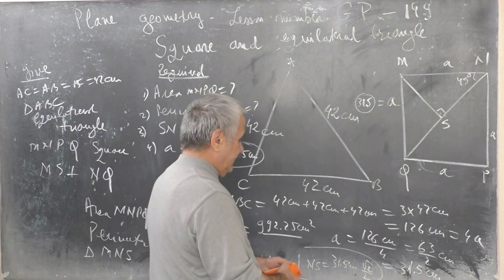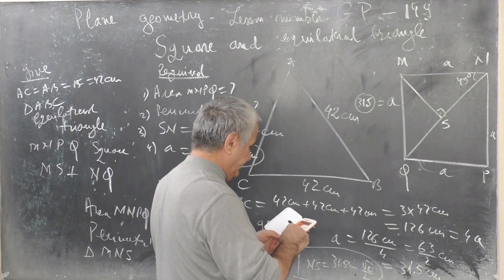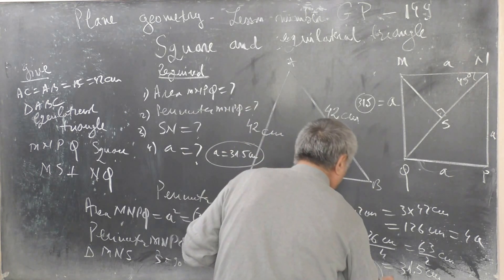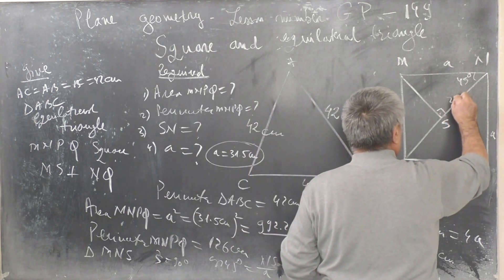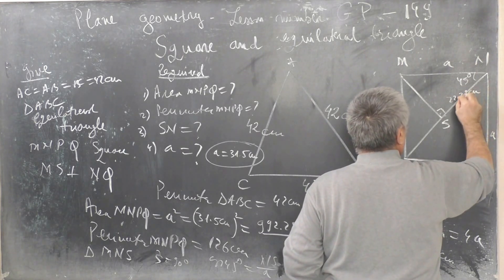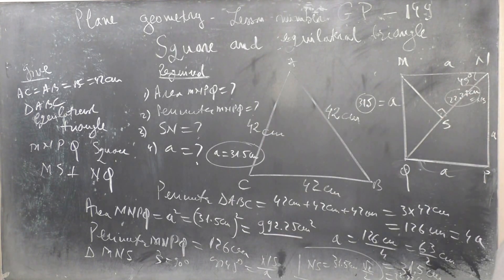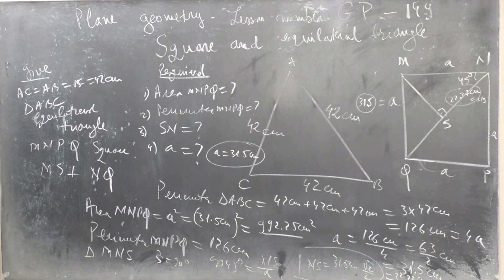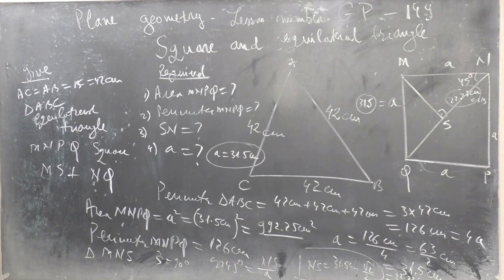Projection from diagonal QM equals one-half times projection from diagonal NQ. This is a square and equilateral triangle compound problem.